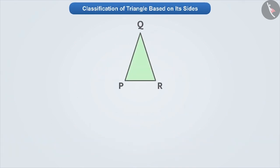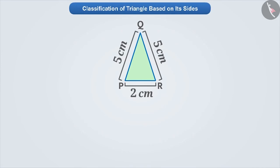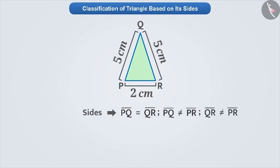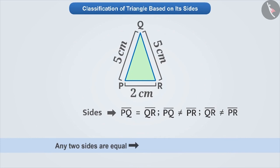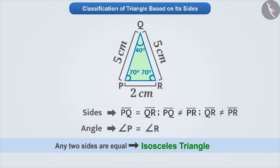Now, look at this triangle. If we take the measurement of its sides, then we find that two of its sides are equal and the third side is not equal to the other two sides. A triangle whose any two sides are equal is called an isosceles triangle. If we measure its angles, then we will know that the angles opposite to equal sides are also equal.